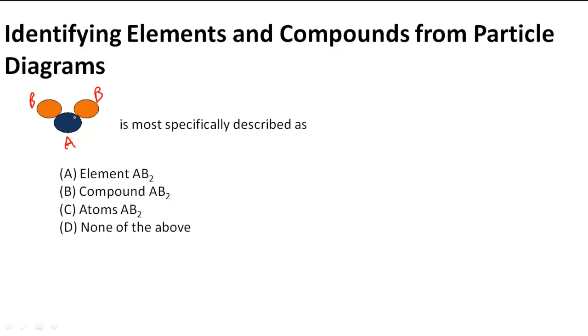And we know when atoms are chemically combined, or atoms from different elements are chemically combined, we call it a compound. So this must be a compound of AB2, and notice that they put A for one atom of A and B2 to describe that there are two atoms of B.